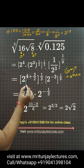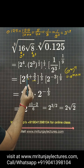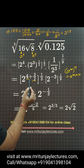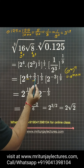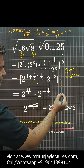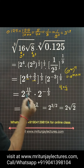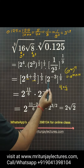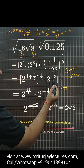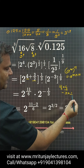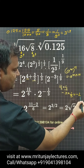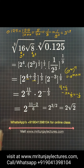After that, the sum of the two exponents: 2 into 4 is 8, plus 3 is 11, divided by 2, into 1 by 3 — that is 11 by 6. And here, 2 to power minus 3 into 1 by 9, that is minus 3 into 1 by 9, which is minus 1 by 3. So we get 2 to power minus 1 by 3.